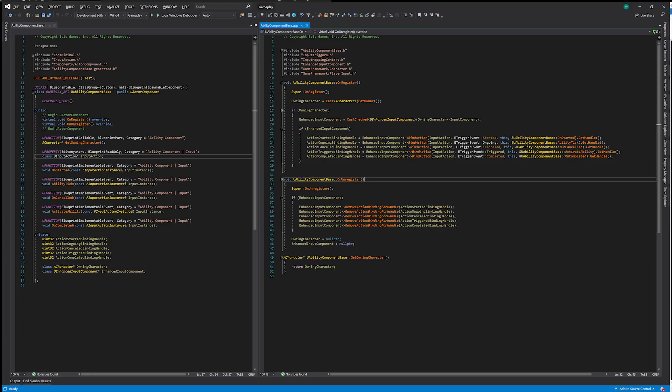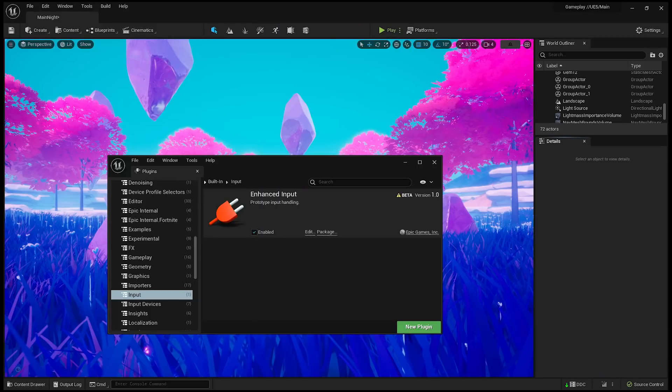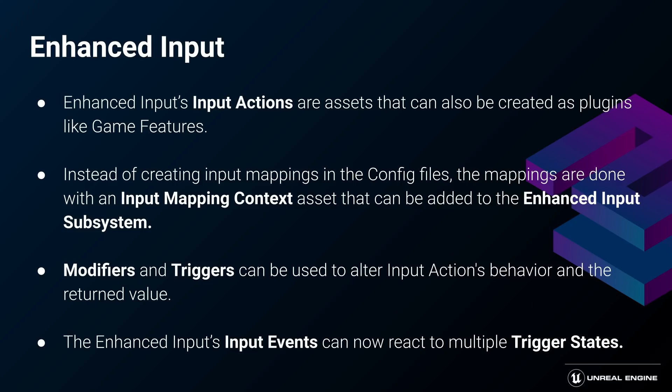For my game's proprietary ability system, I created just one C++ class. It was necessary because I wanted to profit from the goods delivered by the Enhanced Input plugin. The Enhanced Input plugin is Unreal's modular approach to input mapping — the input actions become assets that you can create inside your plugins. Input mapping contexts can be used to map actions to specific inputs, and can be added to the Enhanced Input subsystem at any time to make our feature able to respond to player input events. The new input actions also introduce modifiers and triggers.